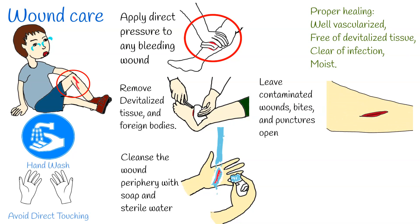Wounds that are sutured in an unsterile environment, or are not cleansed, irrigated, and debrided appropriately, are at high risk for infection due to contamination. Wounds not closed primarily because of high risk of infection should be considered for delayed primary closure by experienced medical staff using sterile technique. Step 7: Remove devitalized tissue and foreign bodies prior to repair, as they may increase the incidence of infection.